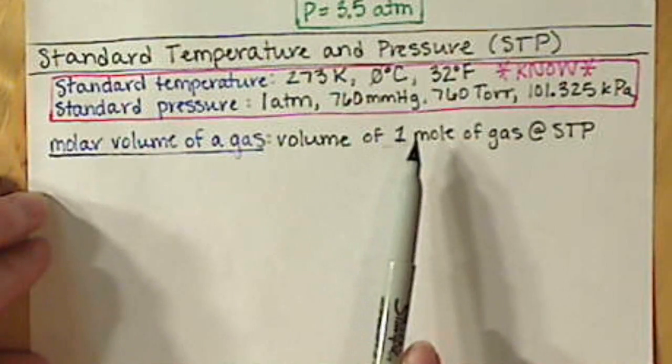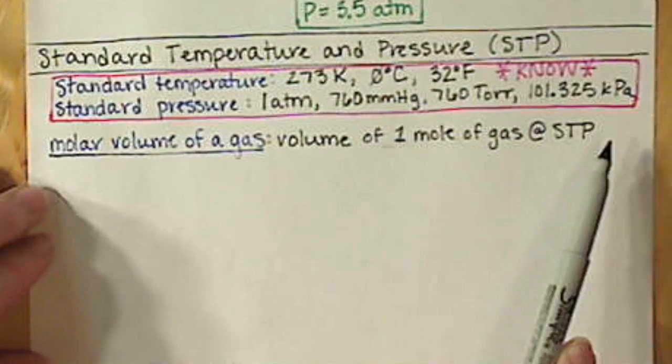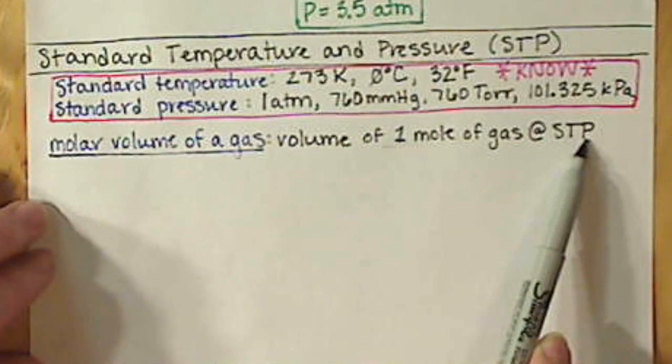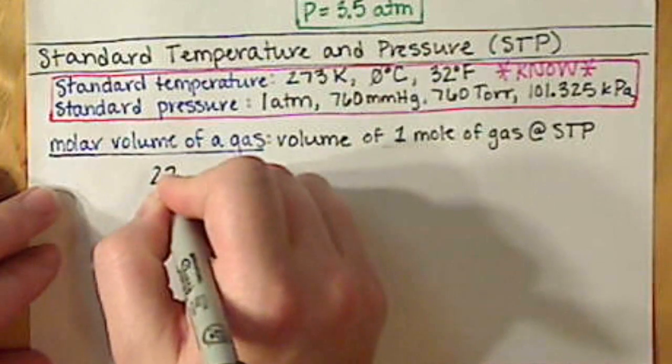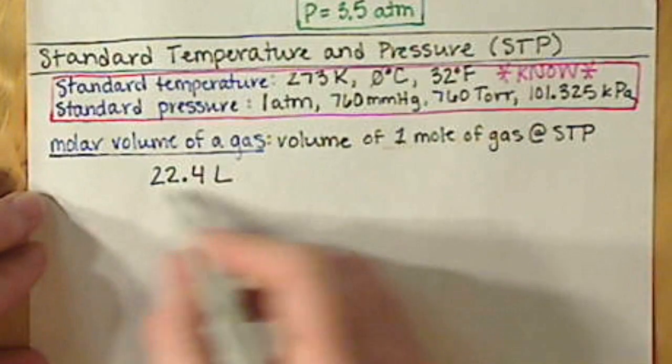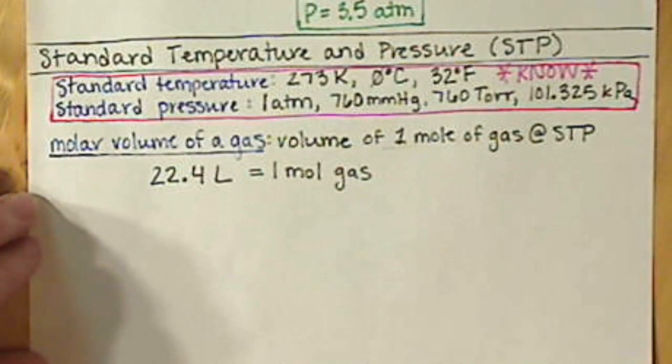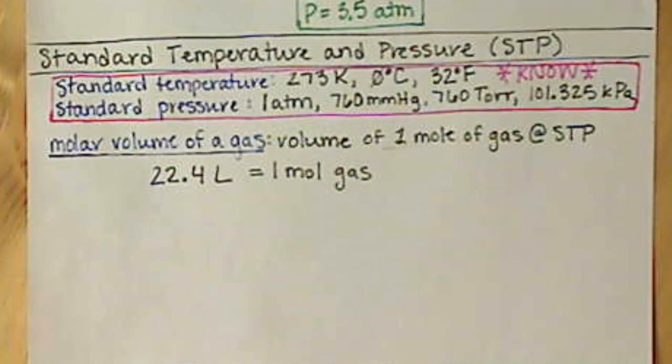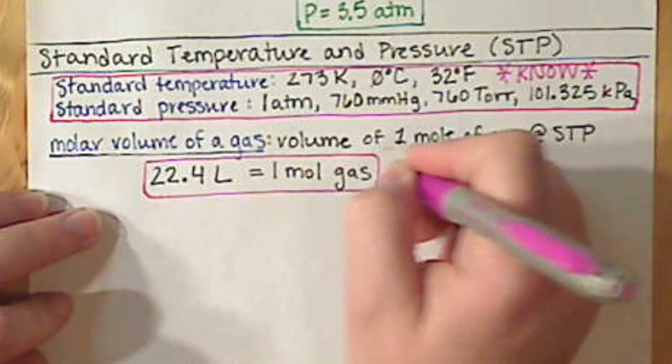Now if we plug in our values for one mole for our n, 273 for our temperature, and one atmosphere for our pressure, and plug that into our PV=nRT, our ideal gas law, we will end up with 22.4 liters. So we have 22.4 liters is equal to one mole of any gas. Doesn't matter what that gas is. If it's at STP and we have one mole of it, it's going to occupy 22.4 liters of space. This is another thing you are going to want to know.